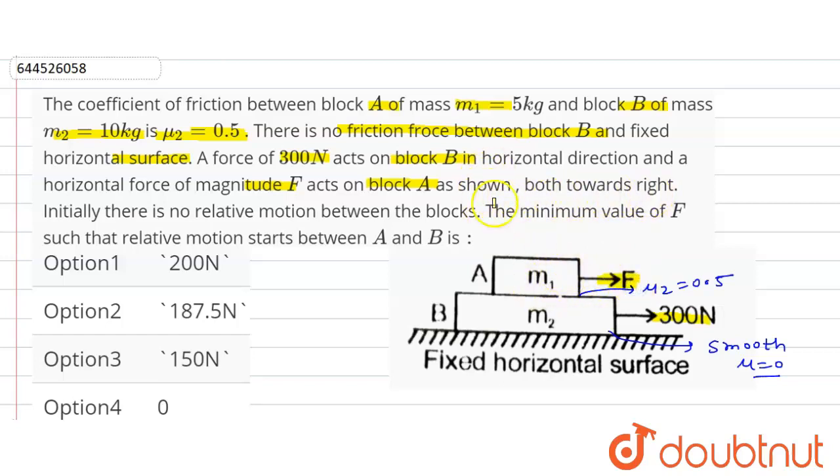F force is acting on block A as shown, both towards right. Initially there is no relative motion between the blocks. The minimum value of F such that relative motion starts between A and B. So we have to find the minimum force to apply on block A so relative motion starts.